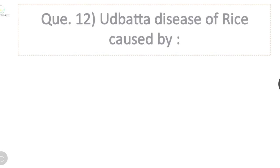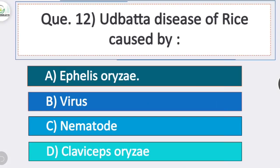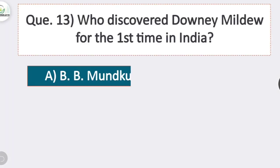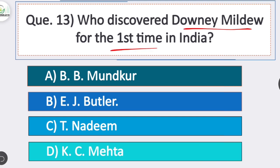Question 12: udbatta disease of rice is caused by? Option A is correct — Ephelis oryzae. Udbatta disease of rice is caused by Ephelis oryzae. Question 13: who discovered downy mildew for the first time in India? Option B is correct — E.J. Butler. Edwin John Butler discovered downy mildew for the first time in India.